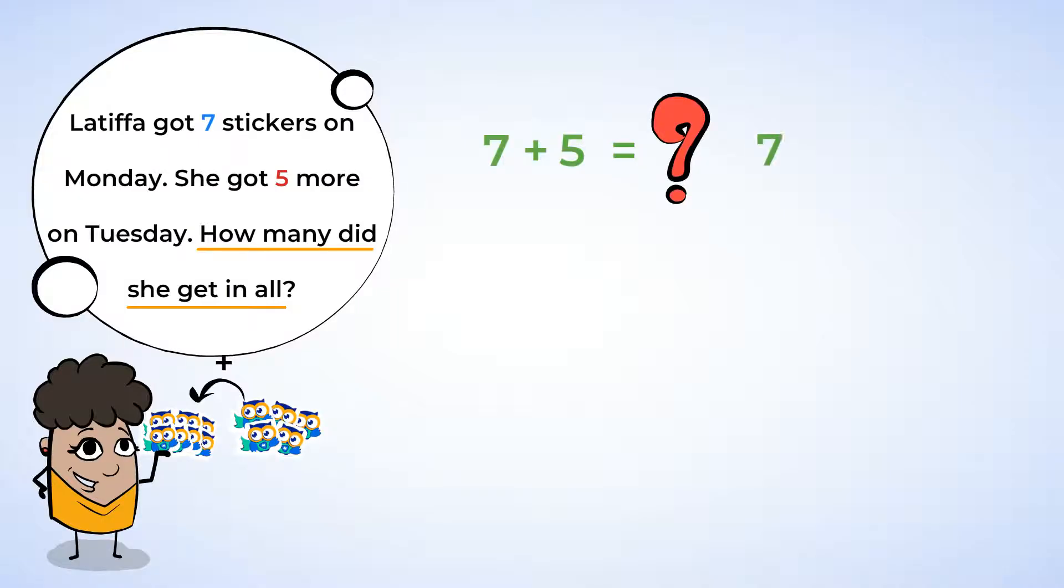We know that 7 plus 3 equals 10. So since we already have our 7, let's get a 3 by separating the 5 into 3 plus 2. Now we have 7 plus 3 plus 2. And do you see the 10 there? It's the 7 plus 3. You found it again. And let's finish solving the problem now. What is 10 stickers plus 2 stickers? Just change the 0 to a 2, and 10 plus 2 equals 12. Latifa got 12 stickers in all. Well done. You're getting good at this game.